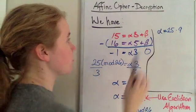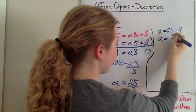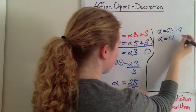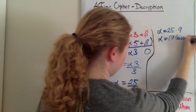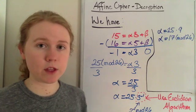But for now, back to trying to find alpha. So alpha is, we multiply 25 times 9, and then that equals 17 mod 26. So we have now found that alpha equals 17, which is half of the key.